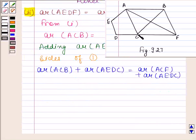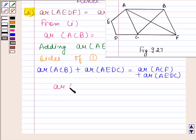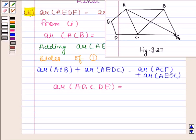Now, ACB plus AEDC is equal to area of ABCDE. And ACF plus AEDC is equal to area of AEDF. So, area of ACF plus area of AEDC is equal to area of AEDF.